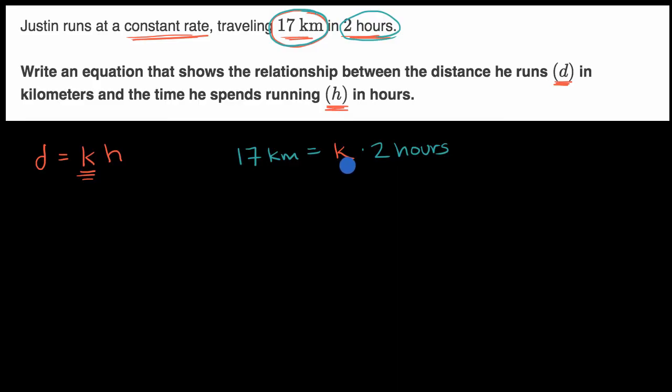All right, well there's a bunch of ways to solve for k, but one way is to say let's just divide both sides by two hours. So if you divide both sides by two hours, you are going to get that k is going to be equal to 17 over two kilometers per hour, which is 8.5 kilometers per hour.